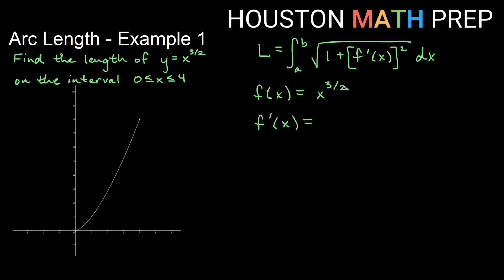This is just going to be a power rule. The power comes out front, we get 3 halves x to the, now the power goes down by 1, so 3 halves minus 1 would be 1 half. And x to the 1 half you might think of as the square root of x. So that would be 3 half square root of x for f prime of x.